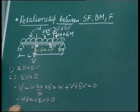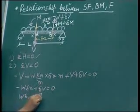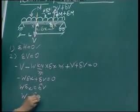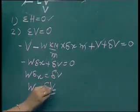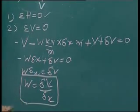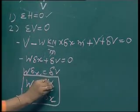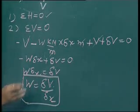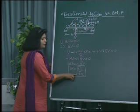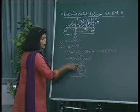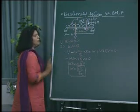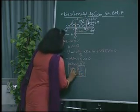From sigma V equals zero we get: minus W times delta x plus delta V equals zero, therefore delta V upon delta x equals W. This equation shows that the rate of change of shear force is directly proportional to the amount of loading on the beam.